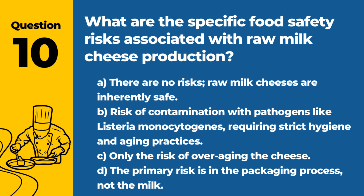Question 10. What are the food safety risks associated with raw milk cheeses? a. There are no risks; raw milk cheeses are inherently safe. b. Risk of contamination with pathogens like Listeria monocytogenes, requiring strict hygiene and aging practices. c. Only the risk of over-aging the cheese. d. The primary risk is in the packaging process, not the milk. Answer: b. Risk of contamination with pathogens like Listeria monocytogenes, requiring strict hygiene and aging practices. Managing these risks is crucial for the safe production of raw milk cheeses.